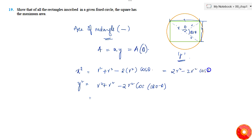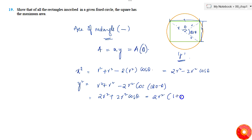So x² = 2r²(1 - cos θ) and y² = 2r²(1 + cos θ).